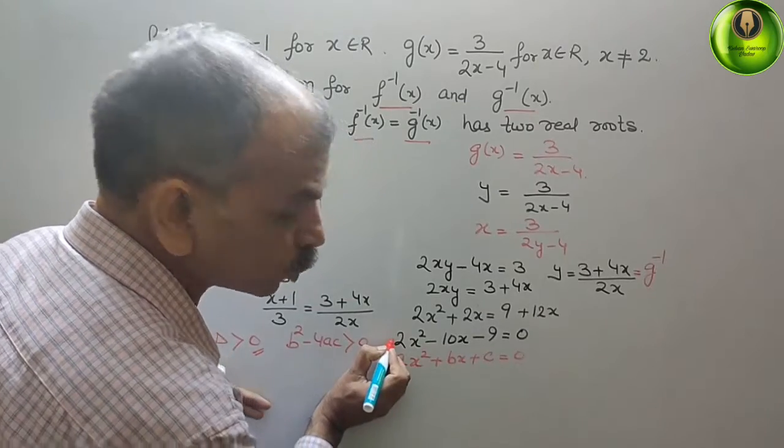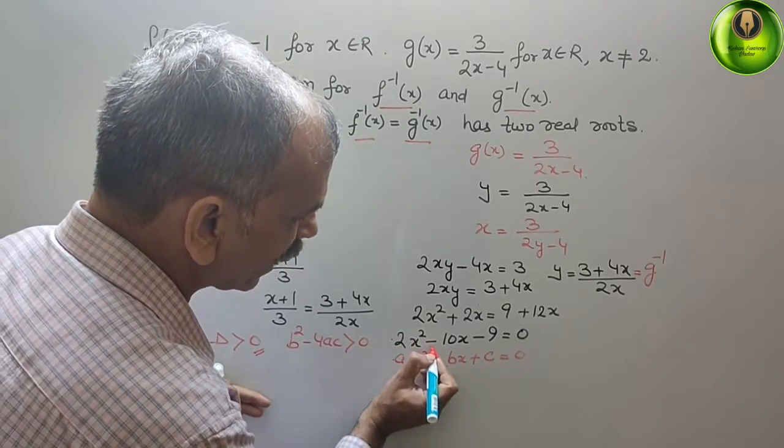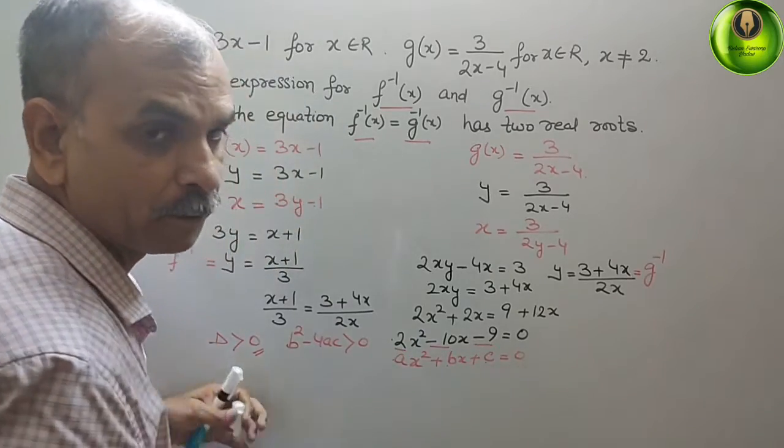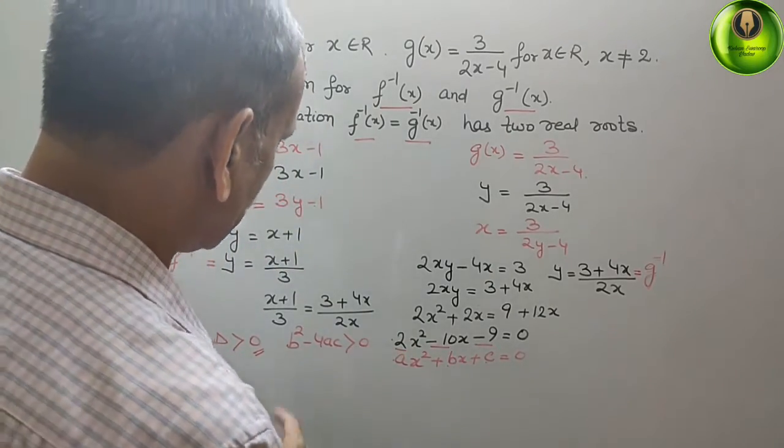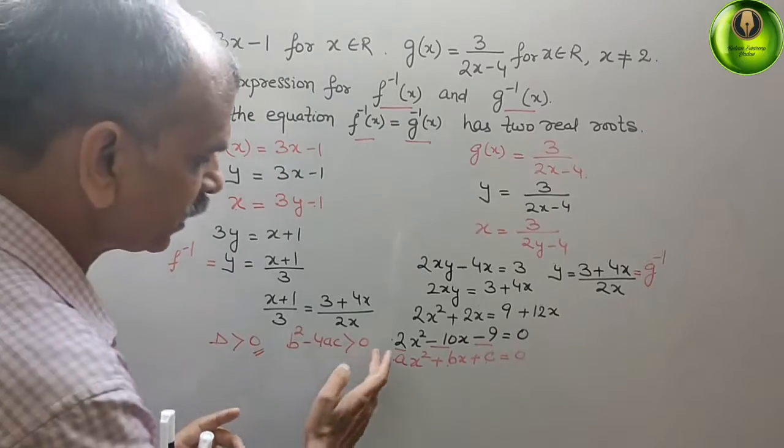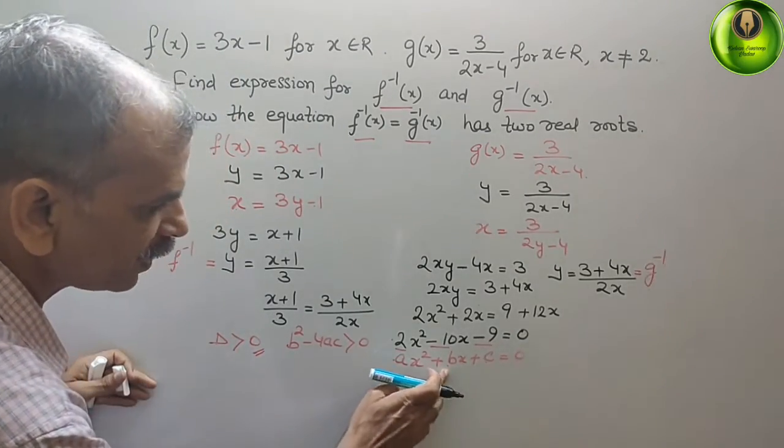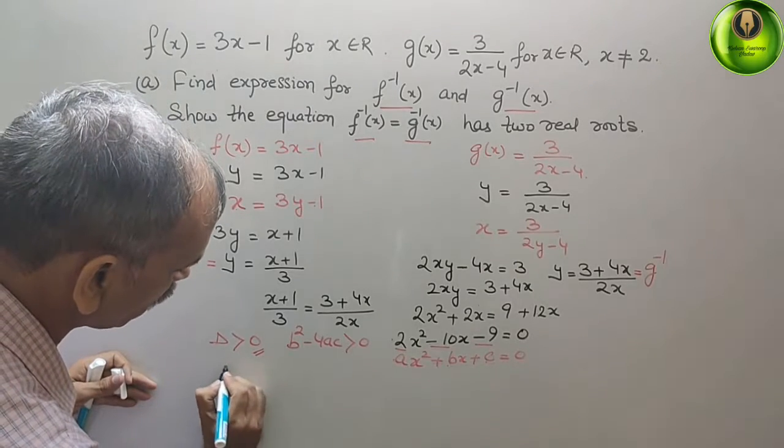That means a is 2, b is minus 10, c is minus 9. Now substitute this value here. We should get greater than 0. So you can see, b is minus 10, minus 10 square.